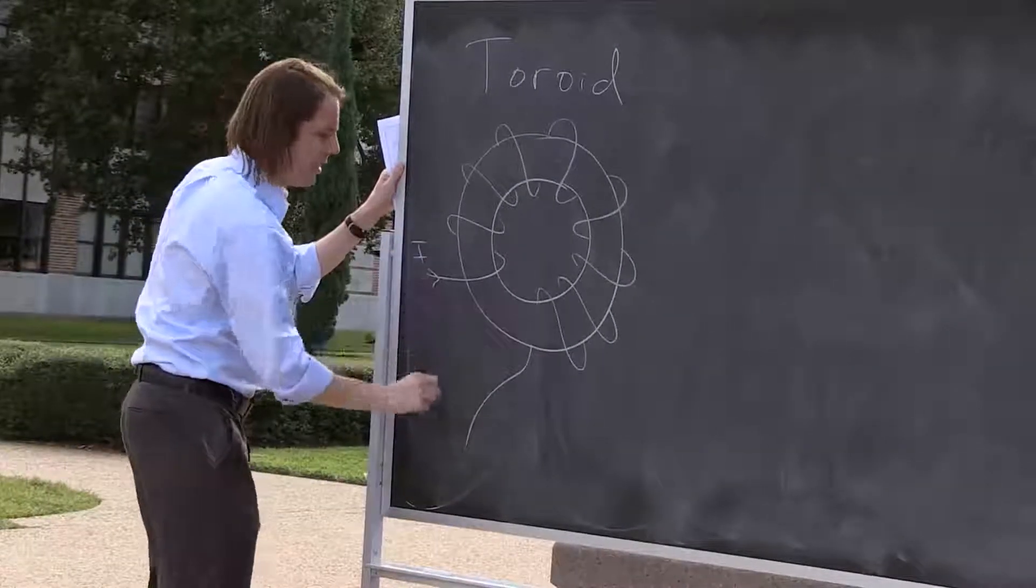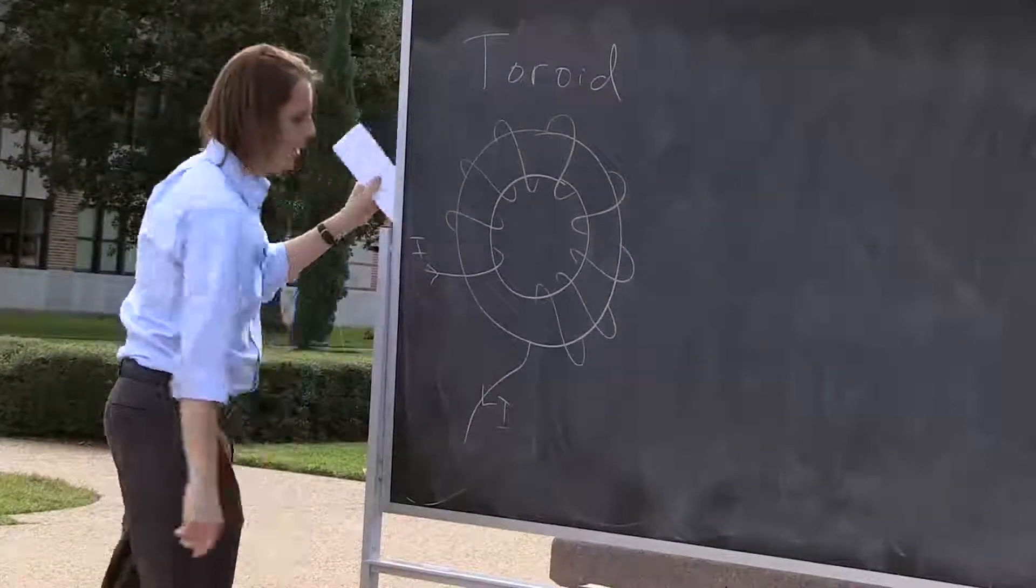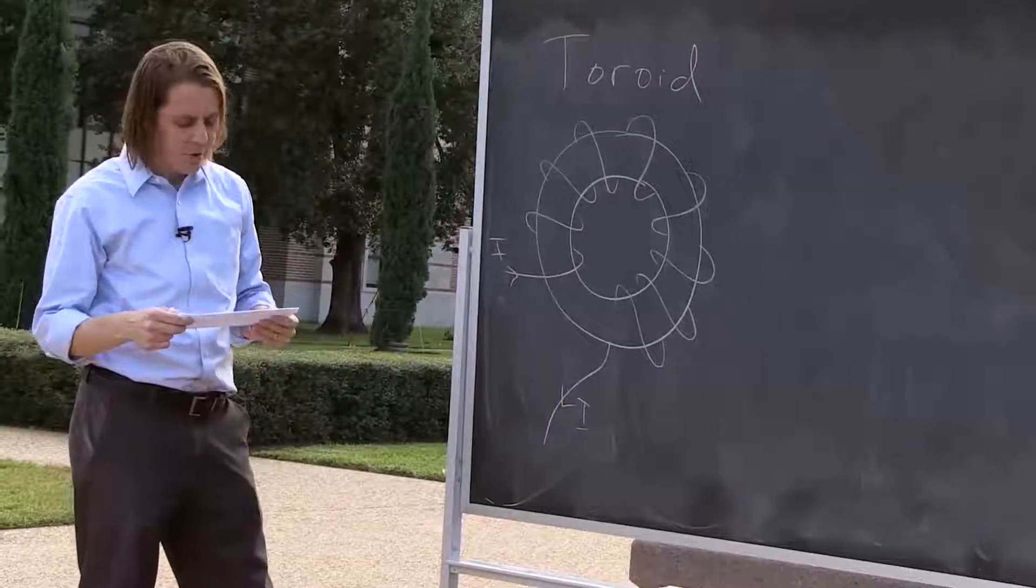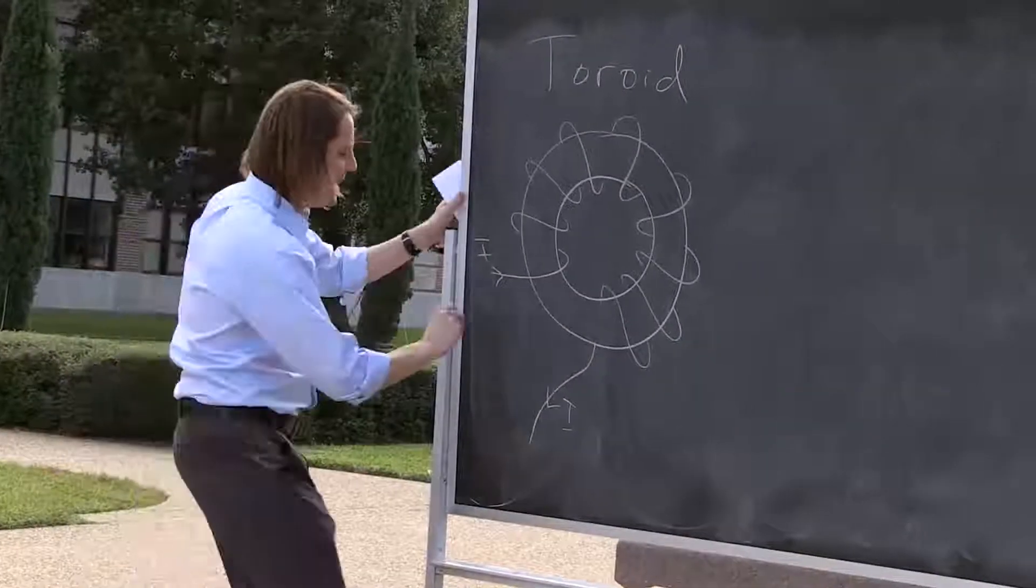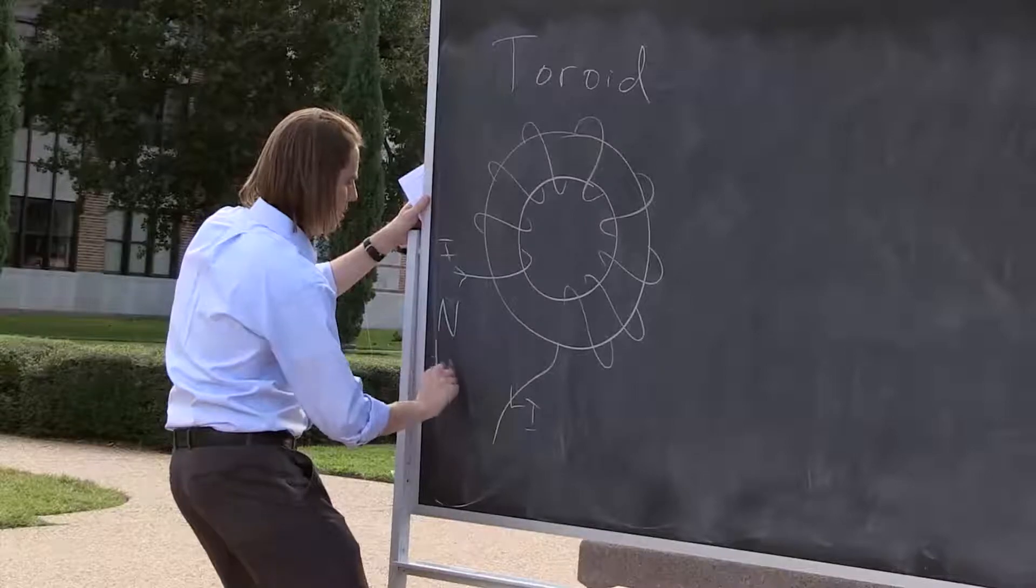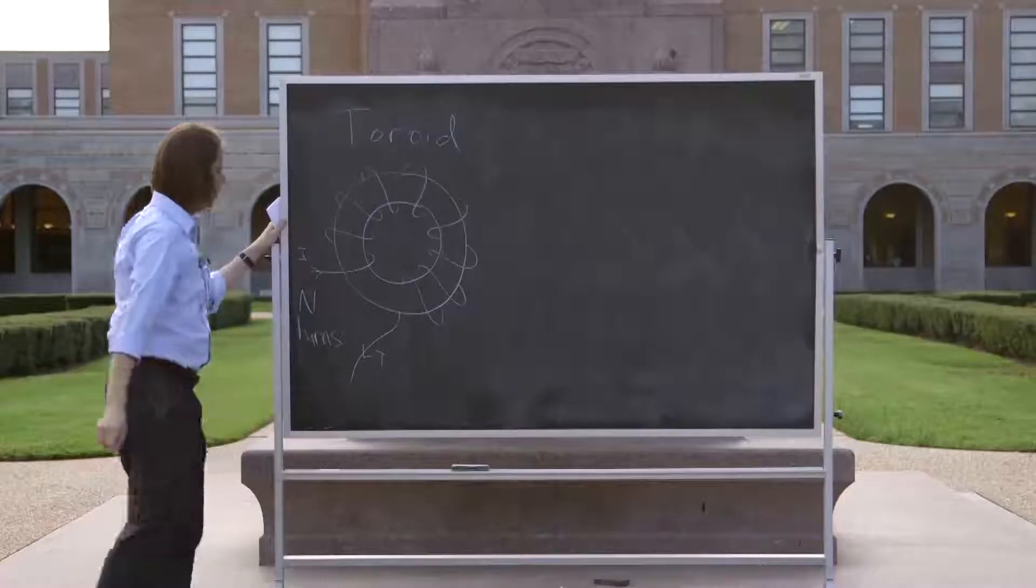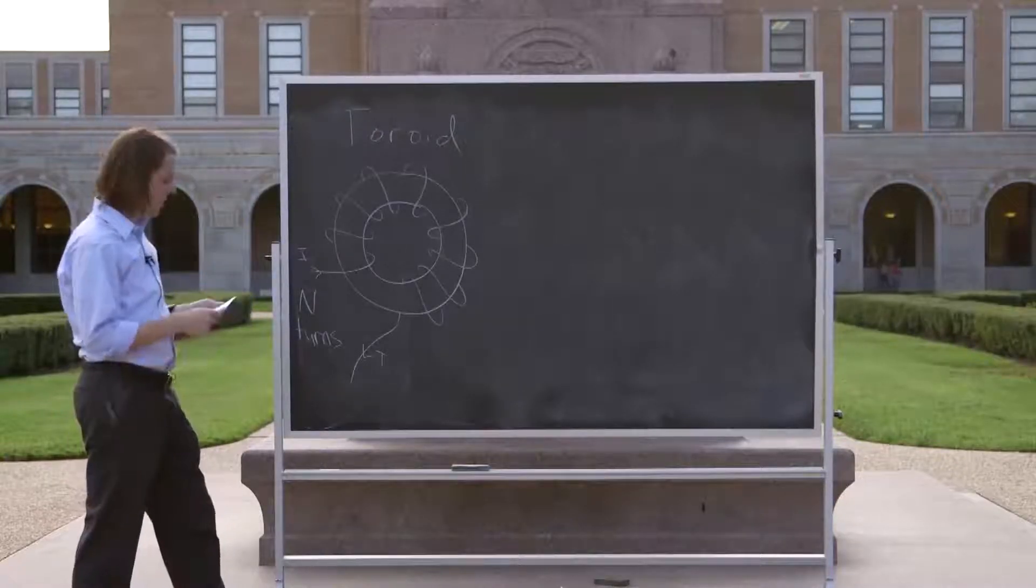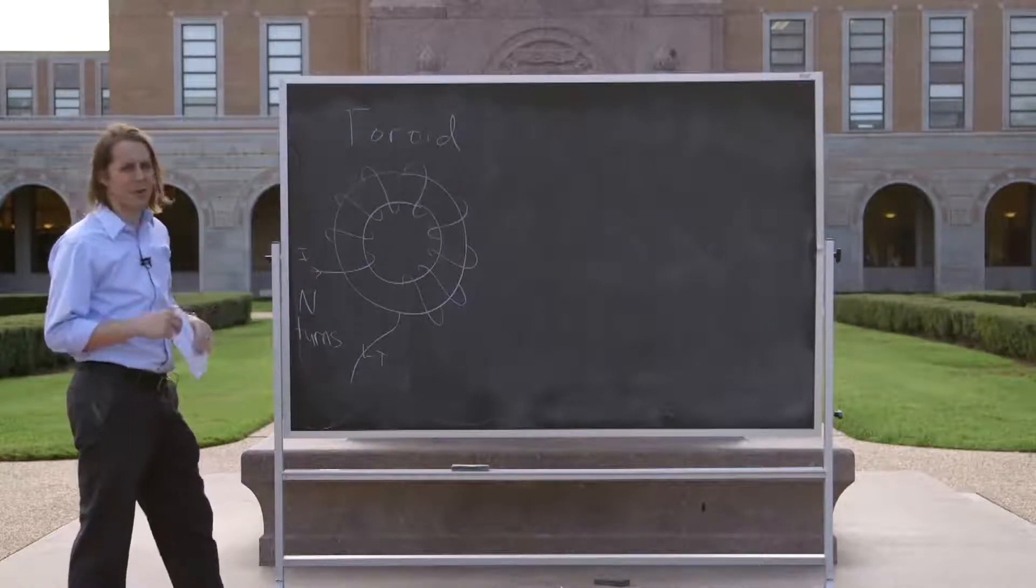Then you send the current in like that, and the current comes out like that. And for this one we're just going to say we have N turns. We don't need to worry about the actual turns per length for now.